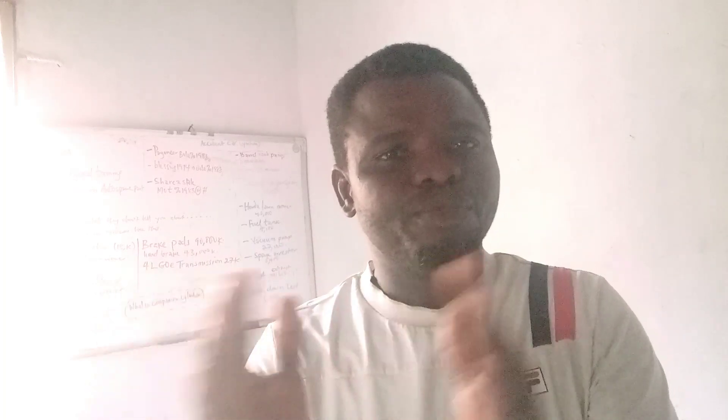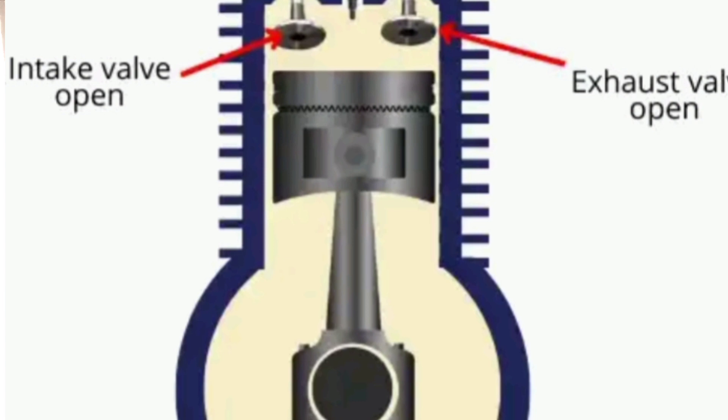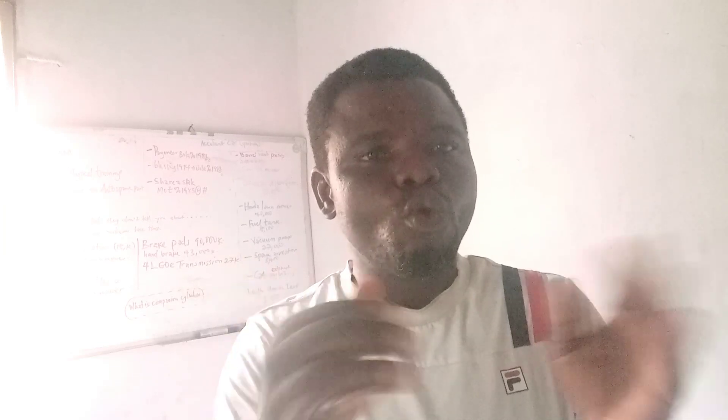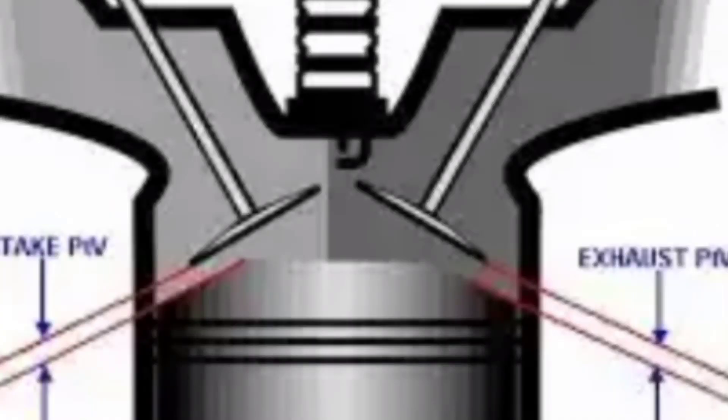What is valve overlap? Valve overlap simply means your intake valve and your exhaust valve remain open at the same time. Don't forget that during the intake stroke your exhaust valve remains closed, while during the exhaust stroke your intake valve remains closed. But during valve overlap, the intake stroke and the exhaust cycle overlap each other — meaning during this period the two valves remain slightly open.